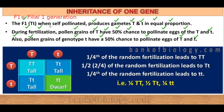The F1 generation, when self-pollinated, produces gametes capital T and small t in equal proportions. During fertilization, pollen grains of capital T have a 50% chance to pollinate eggs of capital T and small t. There is a 50-50 chance of both possibilities. So, collectively, if we keep all the possibilities in mind, let us make a table and look at them.